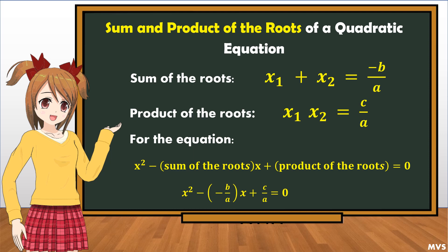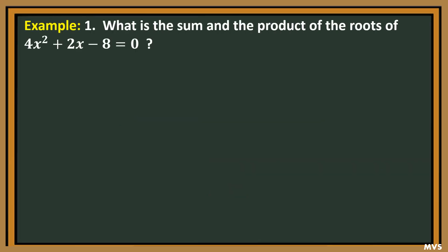Or, x squared minus the quantity of negative b over a times x plus c over a is equal to 0. Example: what is the sum and the product of the roots of 4x² + 2x − 8 = 0?